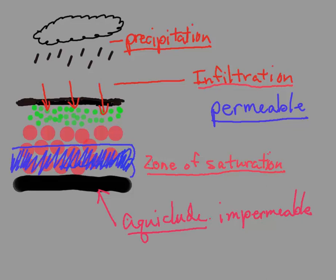That's called the zone of saturation, and then the top level of the zone of saturation right here, that is called the water table. So we have six important terms right now.